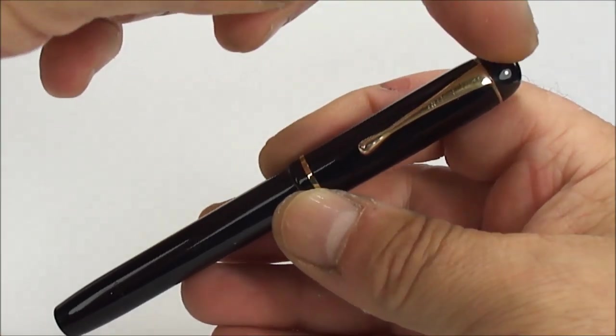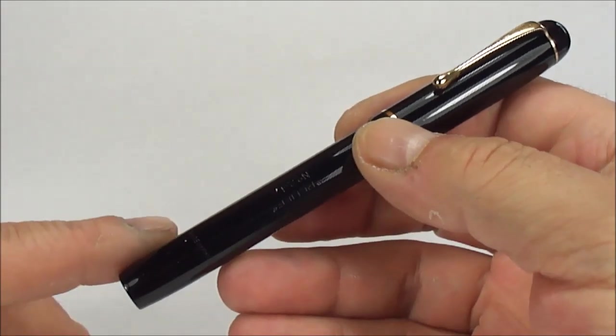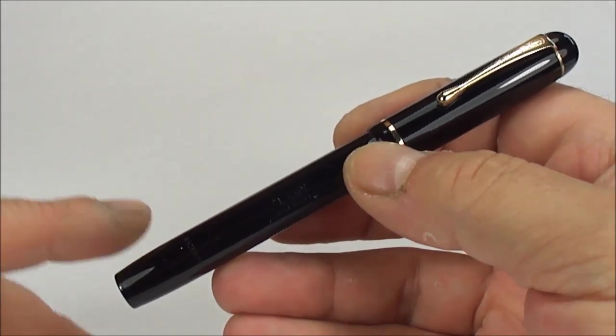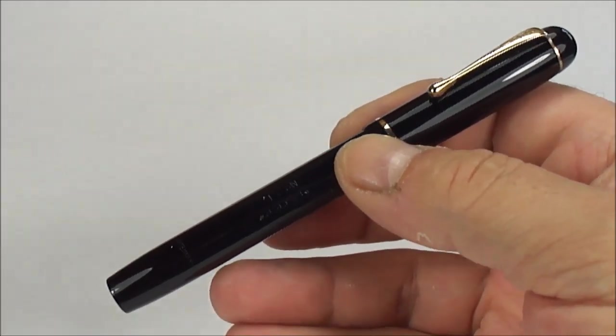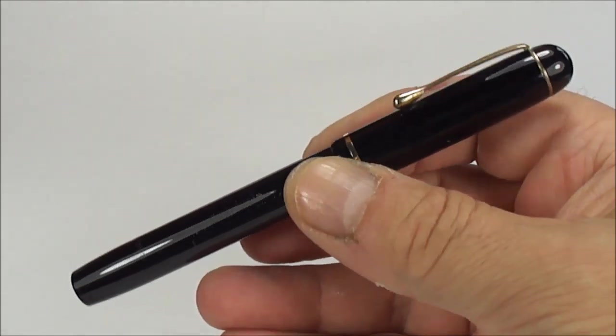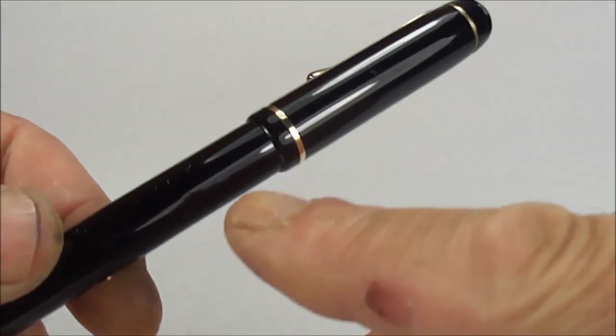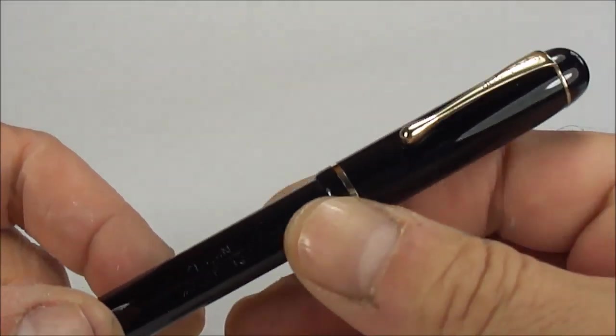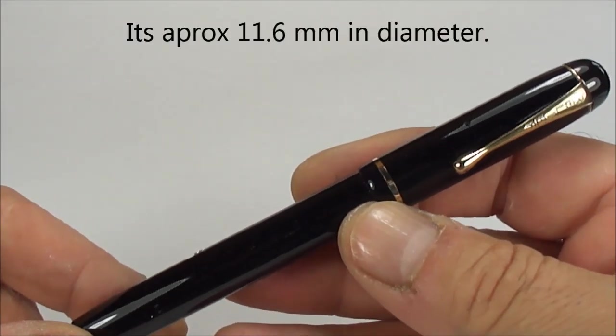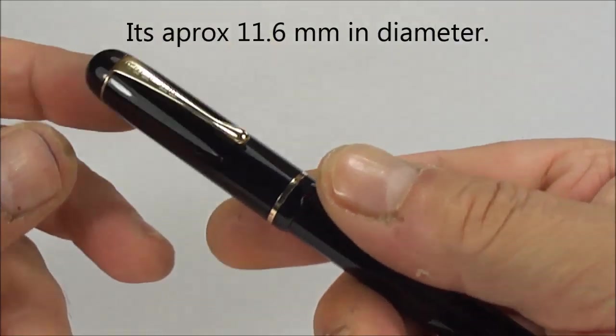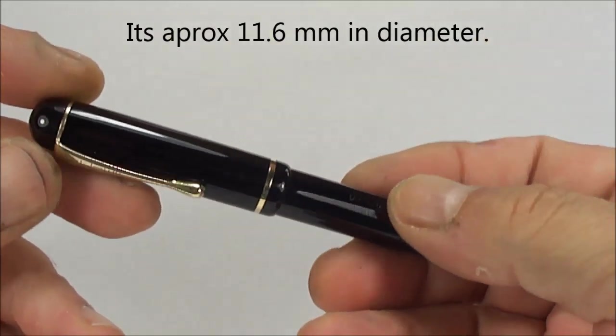The size of this particular pen, from the top of the cap to the bottom of the barrel, is approximately 130 millimeters capped. Around the barrel here, it's quite hefty, 3.6 millimeters in diameter.